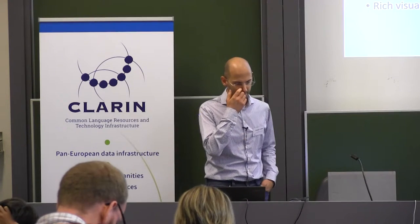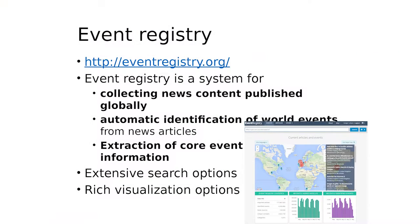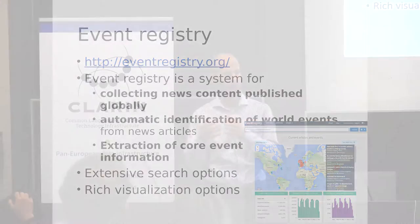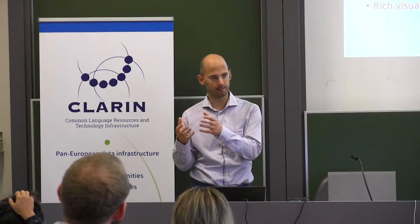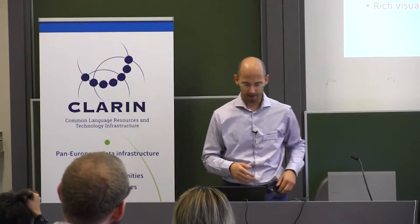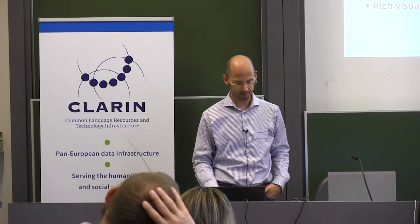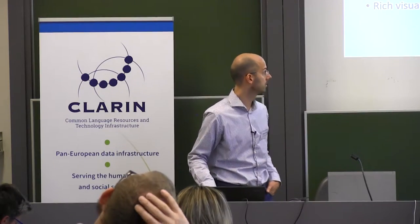Event Registry is publicly available and I'll also be demoing it, but as an introduction I'll just show a few slides. Event Registry is basically a system that first of all collects news in different languages throughout the world. From this news we extract and identify events which are mentioned in the news. We find groups of articles that talk about the same event, then we extract information about this particular event. On top of this data we provide extensive search options and rich visualizations.